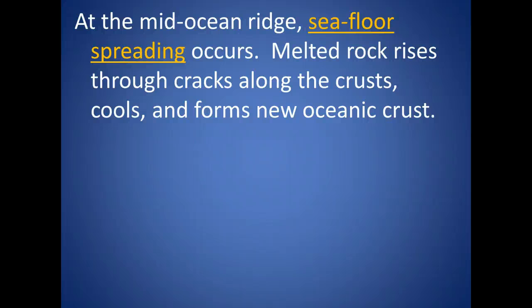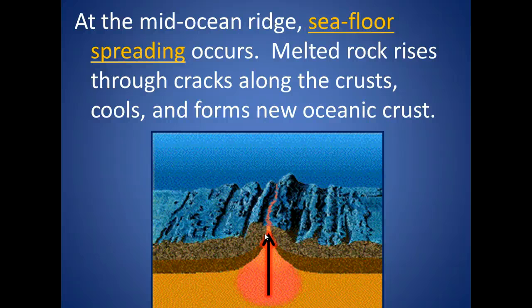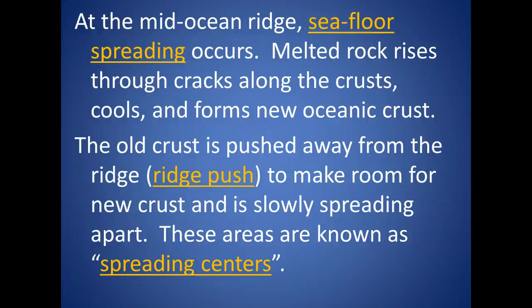At the mid-ocean ridges, seafloor spreading occurs. Melted rock rises through the cracks along the crust, cools, and forms new ocean crust. The magma from the mantle goes up through a crack in the crust of the ocean. When that hot lava hits the cold ocean water, it cools off fairly quickly. Then eventually over time, that new crust is pushed to the side so that other new crust can form. The old crust is pushed away from the ridge — this is called ridge push — to make room for the new crust as it slowly spreads apart. These areas are known as spreading centers.